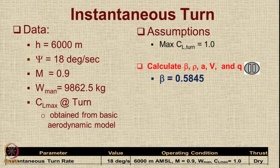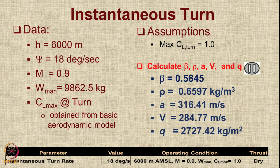Beta comes straight away from the ratio of W maneuver upon W takeoff, and the other parameters come from the standard values from the atmospheric table.